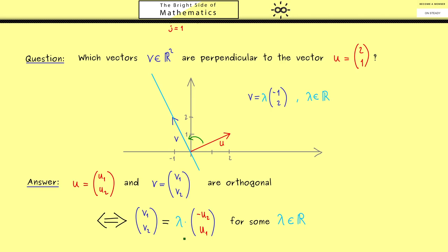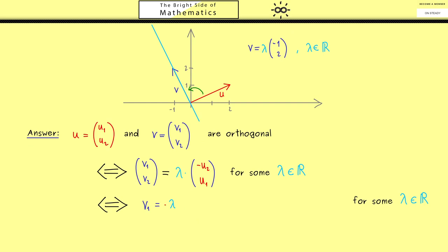OK, now the idea is that we can split this into two formulas. Hence the first one reads v1 = -λu2, and the second one is v2 = λu1. And of course both equations should still hold for some λ in R.